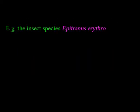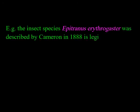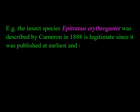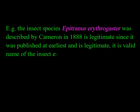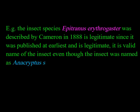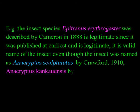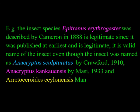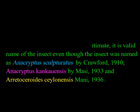For example, the insect species Epitranus erythrogaster described by Cameron in 1888 is the legitimate name since it was published earliest. It remains the valid name even though the insect was later named Acryptus scleptoratus by Crawford in 1910, Acryptus conchoensis by Marsy in 1933, and Aretoceroides scelonensis by Money in 1936. Thank you.